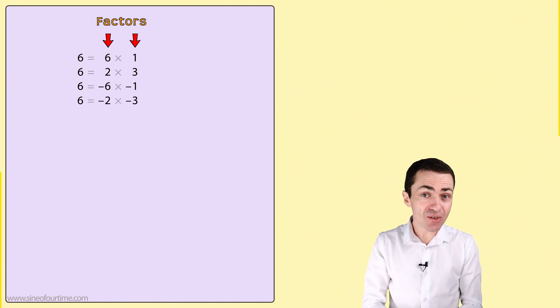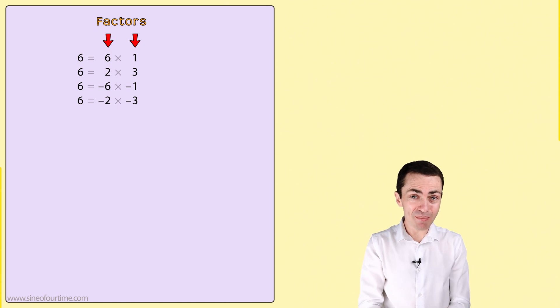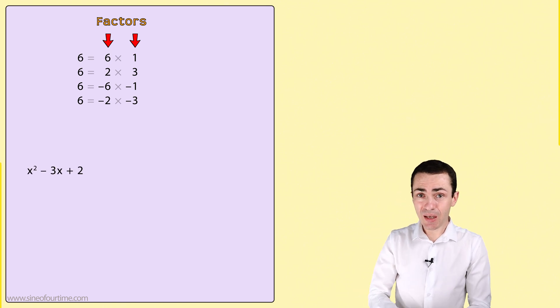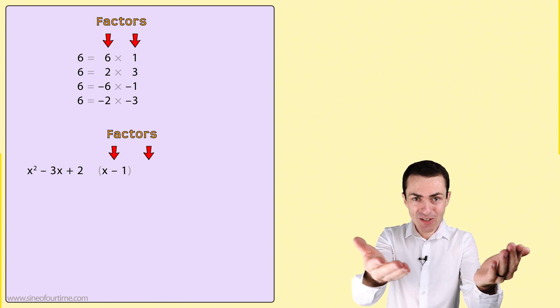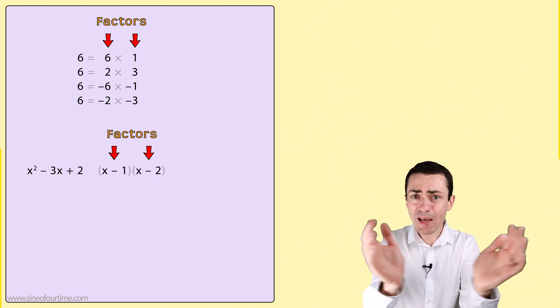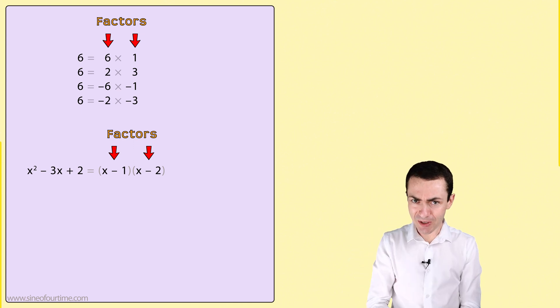Likewise, if we are asked to factor the trinomial x squared minus 3x plus 2, we would say that the factors are x minus 1 and x minus 2, since they multiply together to give us the terms in that trinomial.